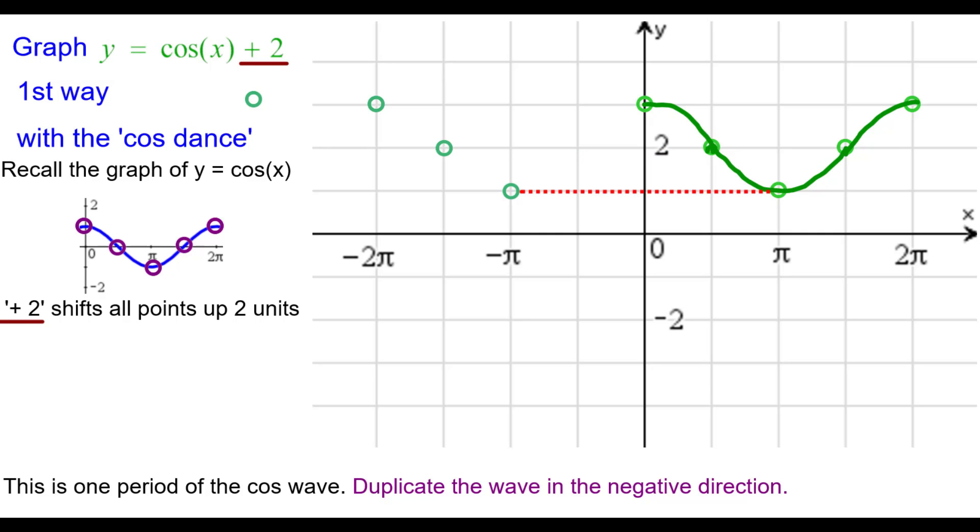This point goes back a period, back to negative pi comma one. And this point goes back to negative pi over two comma two. Go ahead and connect the points as a cosine wave again. The half of a frown, complete smile, half of a frown.